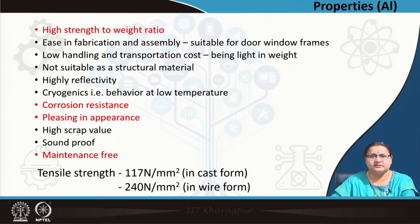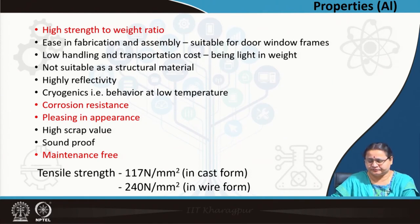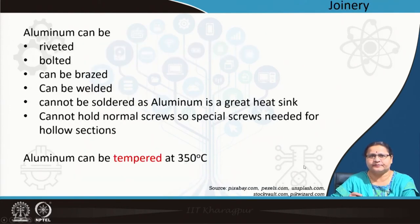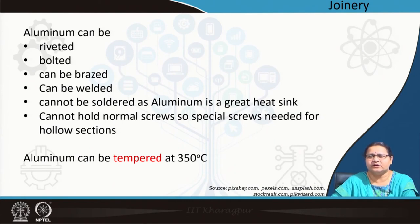Coming to tensile strength: in cast form it is 170 N/mm², in wire form it is 240–270 N/mm². This is much less than that of steel. Regarding joinery for aluminum doors and windows: you can rivet it — which is a permanent joint — you can bolt it, brace it, or weld it. We have gone through all these processes in detail.